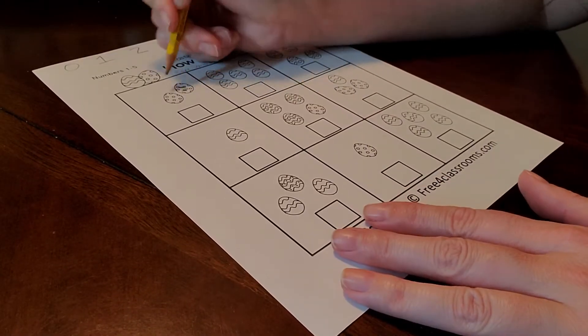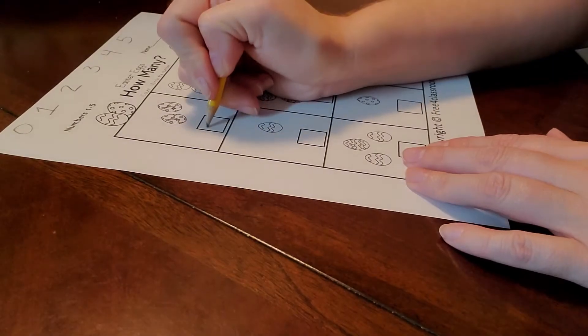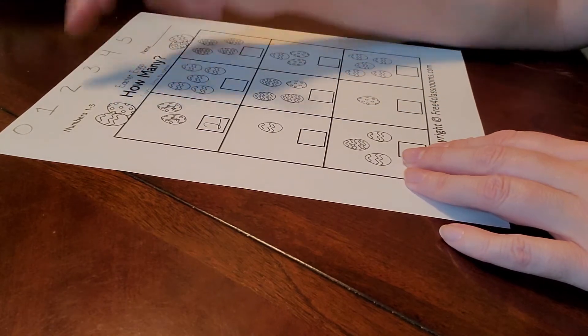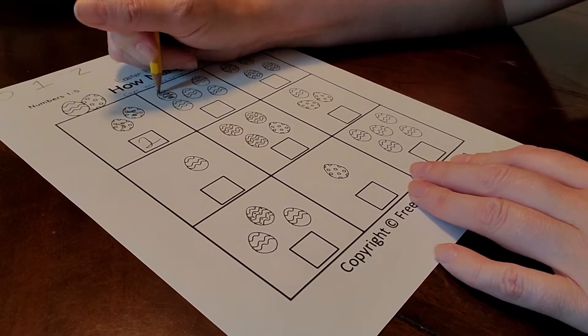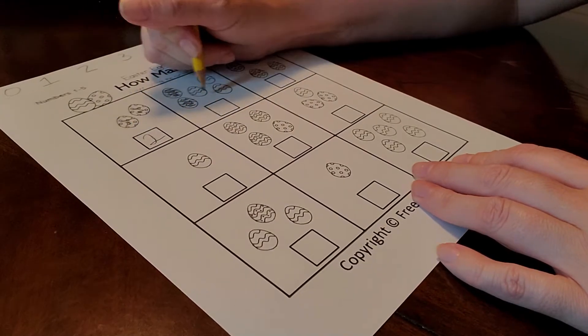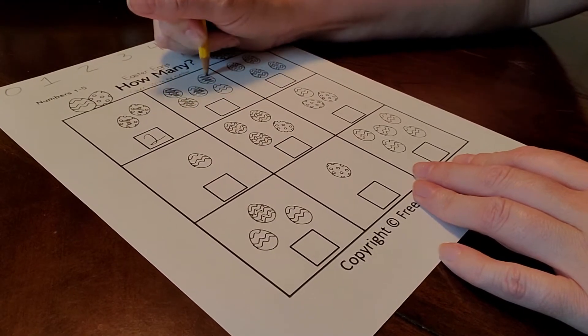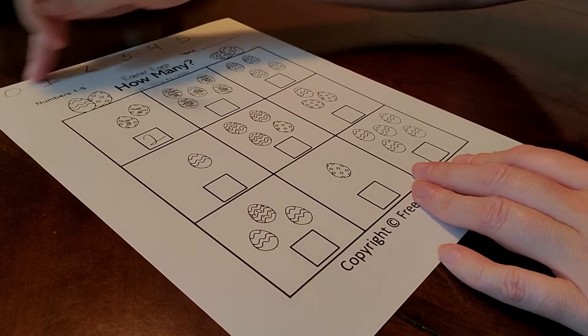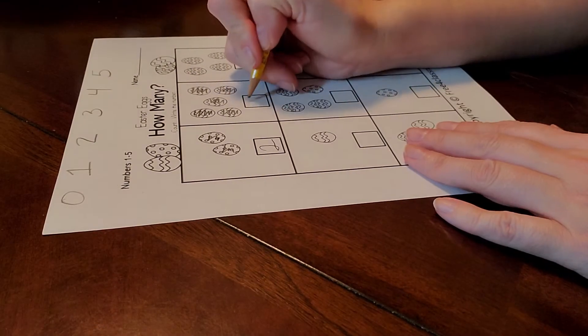So let's count. One, two. So we're going to write the number two. We know it's two because it's right there. One, and I like to cross it off so I know I counted it. Two, three, four, five. We look up here. Five. We're going to write the number five.